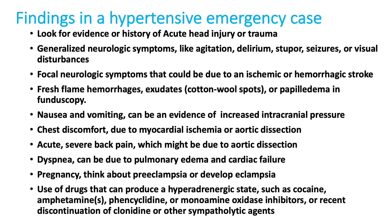Chest discomfort can be seen in myocardial ischemia and aortic dissection; back pain is seen in aortic dissection. Dyspnea can be seen in pulmonary edema. Look for any pregnancy-related complications like eclampsia. Drug intake history is very important — cocaine, amphetamines, and drugs like clonidine discontinuation can all present with high blood pressure.